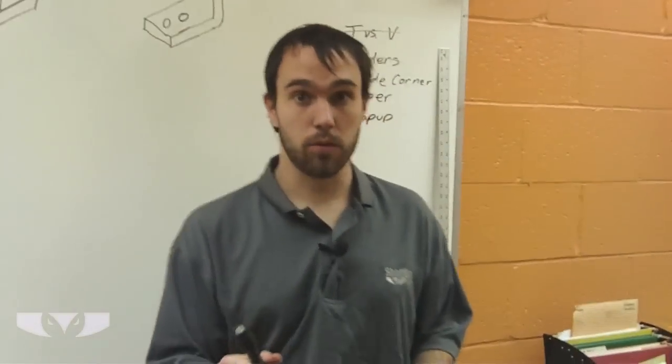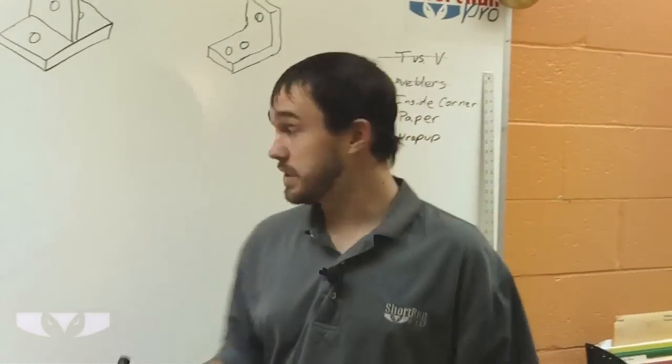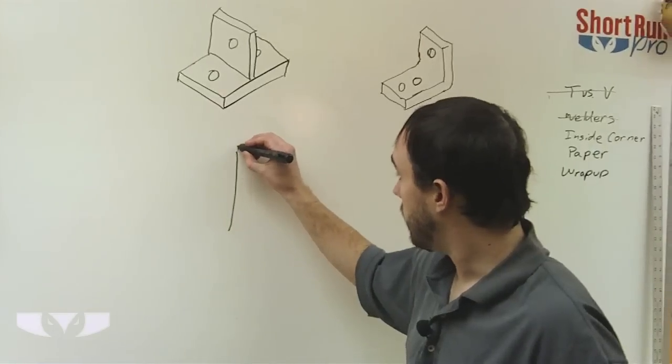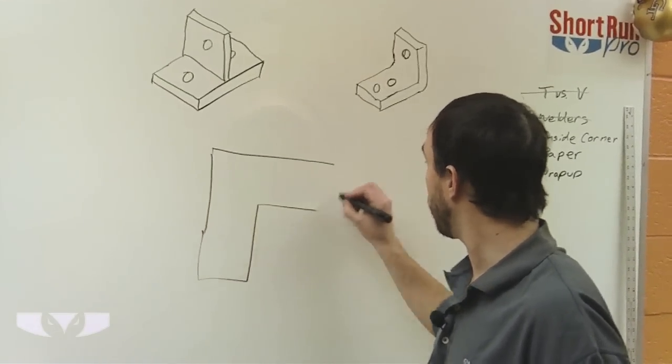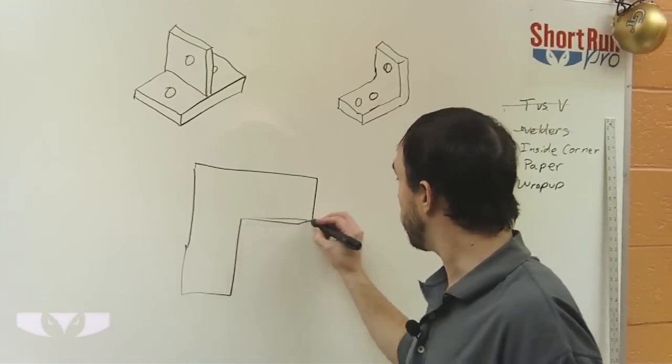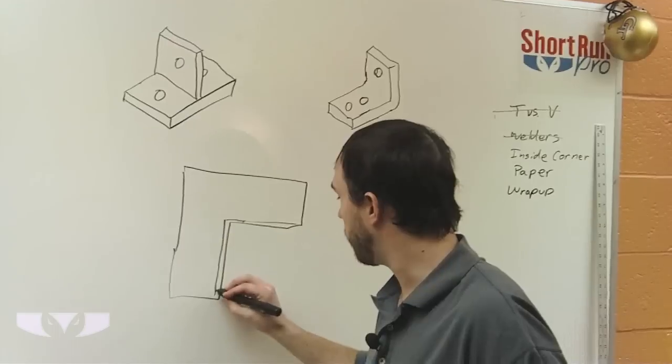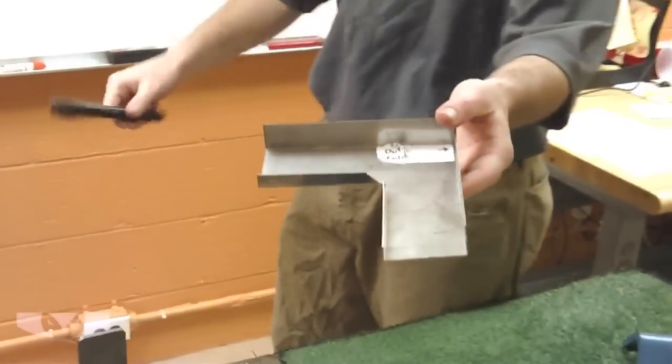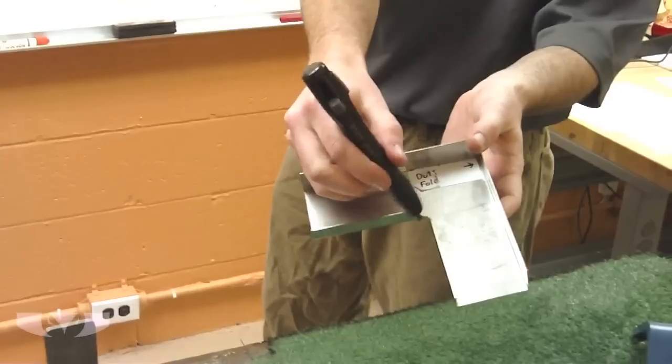Another place that a lot of people don't think about that is going to end up costing them money in welding is this little piece. Now what I'm drawing here is a top down of a part that has an inside corner. And this inside corners got a little piece that comes up like that. So it looks like this. Now you see, when we made this part, we did it right. You notice there's that little gap right there.